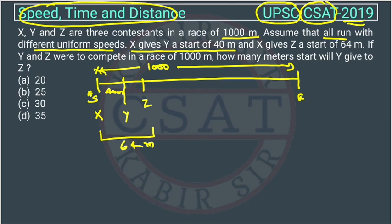XY is 40, so YZ will be how much? YZ will be 64 minus 40, so it will be 24.